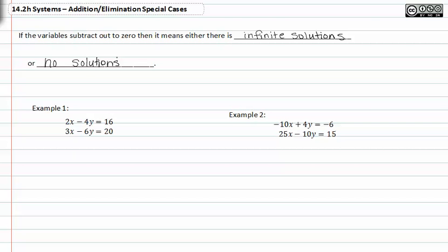In example one, we have 2x minus 4y equals sixteen, and 3x minus 6y is equal to twenty.